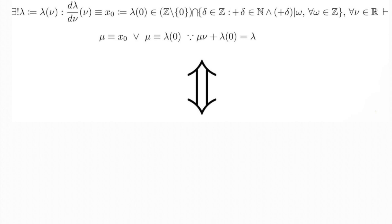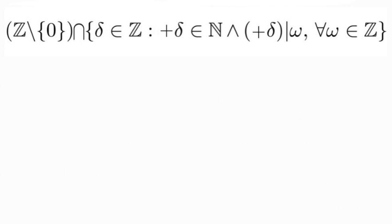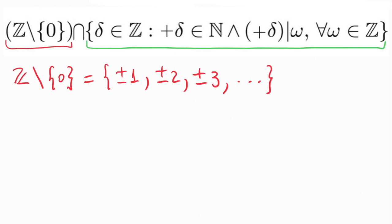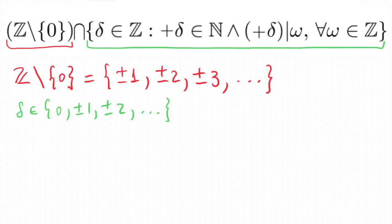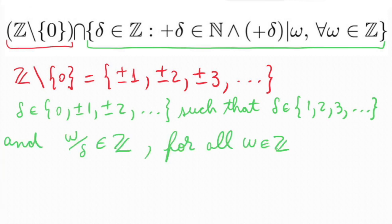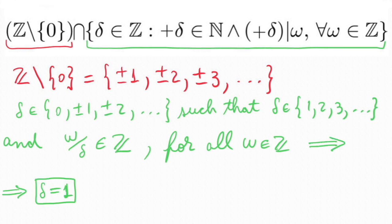In order to interpret it, let's start by understanding which set this is. This set is the intersection of these two other sets. The first is the integers without 0. The second is the set formed by all integers delta such that delta is natural. In other words, only the positive integers. And omega divided by delta is an integer for all integers omega. Hence, delta must be 1 because this is the only natural number that divides all integers.